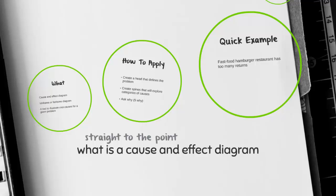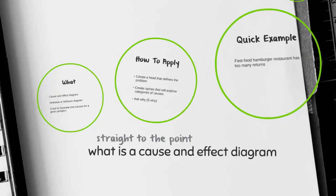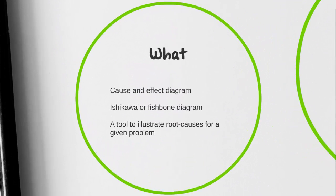Welcome to Straight to the Point. What is a cause and effect diagram? A cause and effect diagram, sometimes also called an Ishikawa or a fishbone because of the way it looks, is a tool that helps illustrate root causes for a given problem.